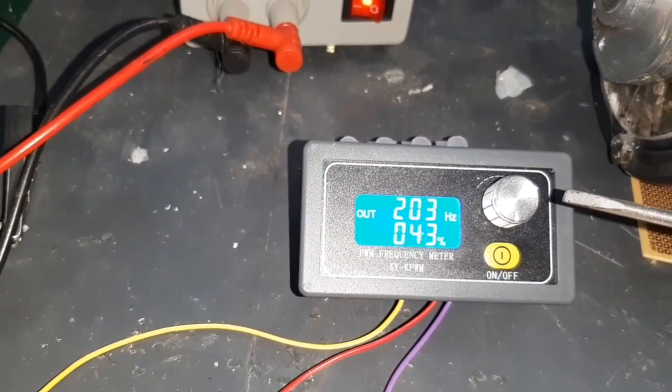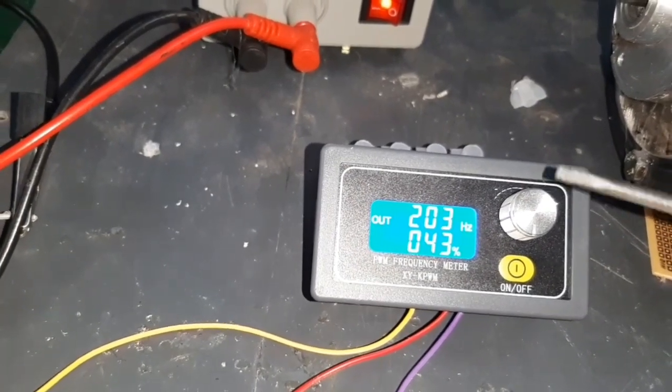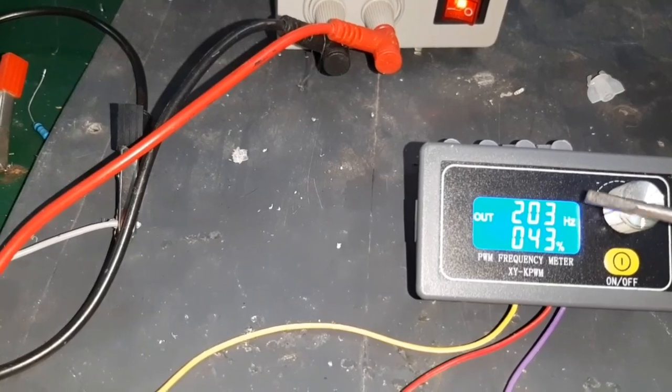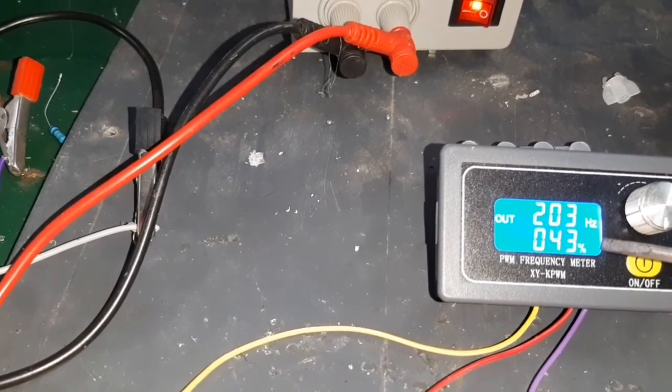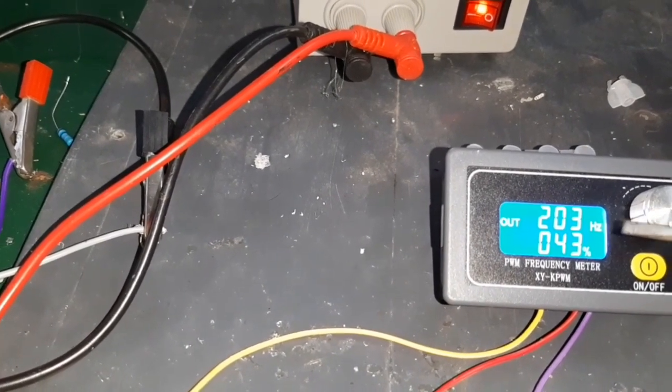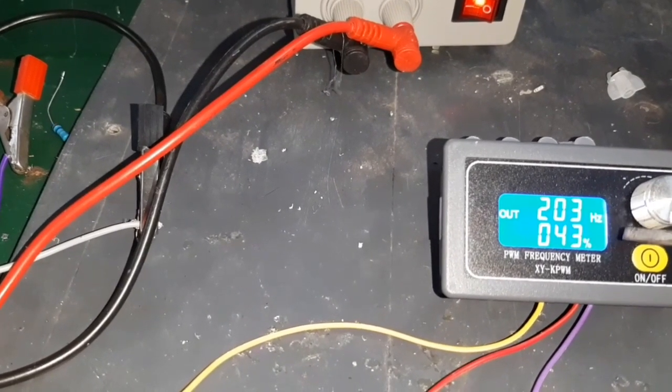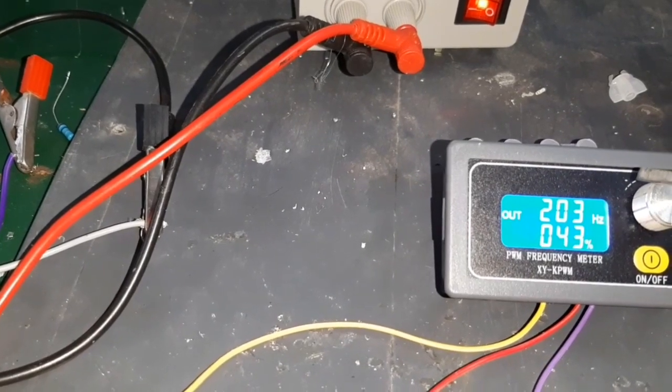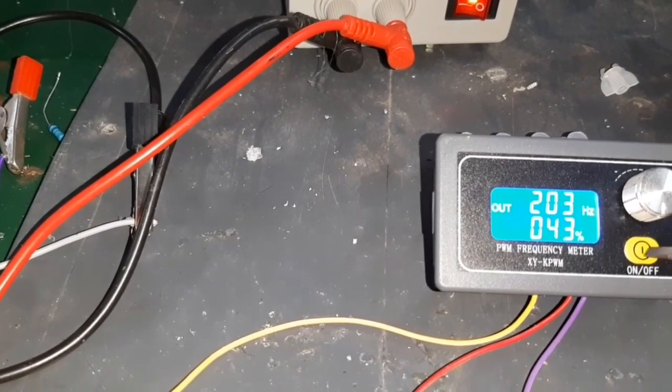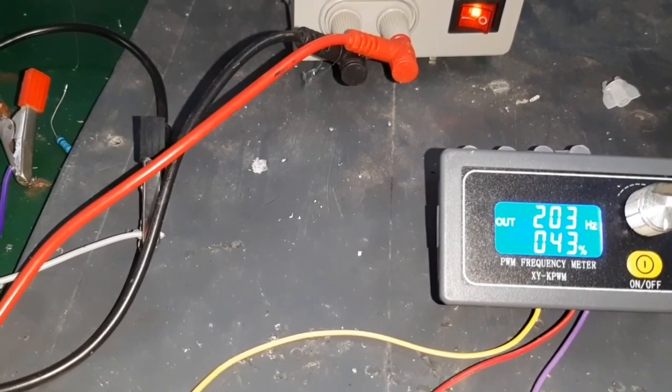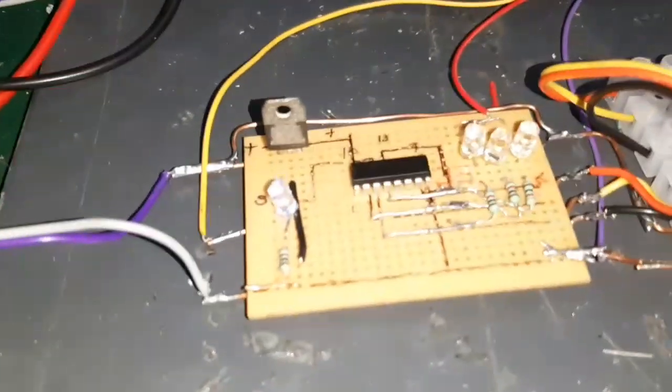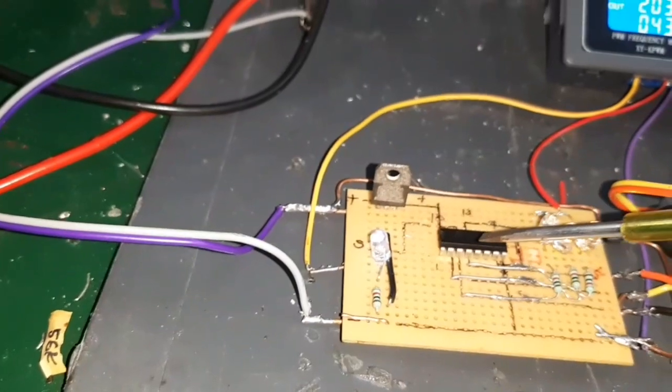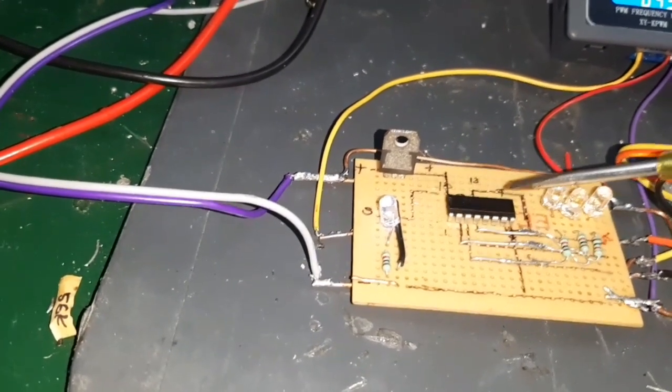Now using the signal generator, look at this. It is an XY PWM signal generator, single channel. The top line shows the frequency of the generator. The bottom line shows the percentage of duty cycle. Duty cycle means on time and off time. You can turn it on and off using this button, and this part is used to increase the frequency and also increase the duty cycle.